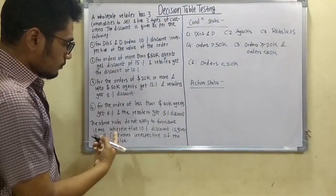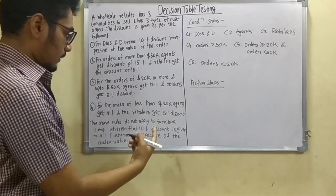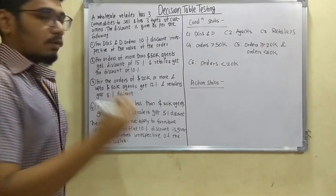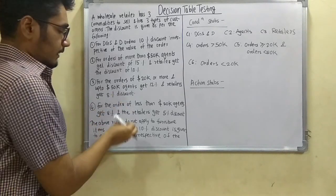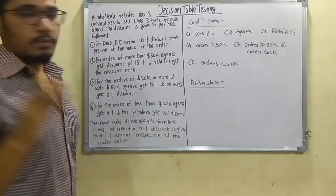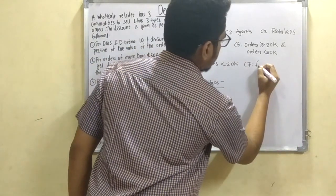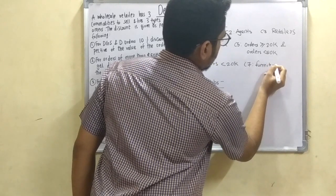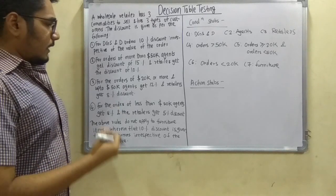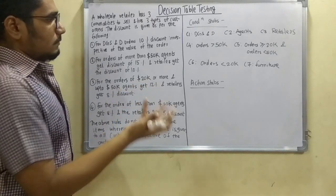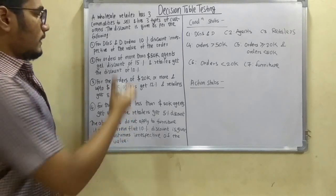One more statement says the above rules do not apply to furniture items, wherein a flat 10% discount is given to all customers irrespective of order value — meaning no order-value condition applies, but a flat 10% action is imposed. So we consider furniture as C7. We have now identified all 7 conditions from this question.